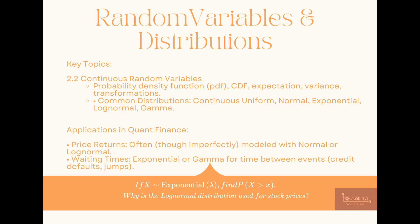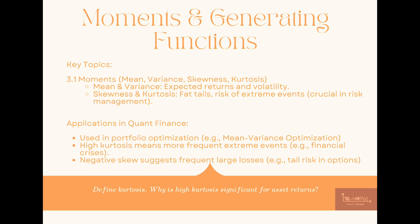For continuous random variables, you have the probability density function, CDF, expectation, and variance. Common continuous distributions include uniform, normal, exponential, gamma, and log-normal. One application is credit defaults and jumps, which can be modeled using exponential or gamma distributions.